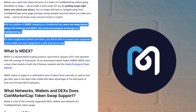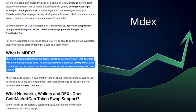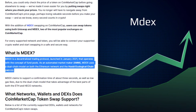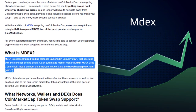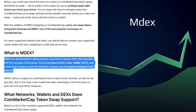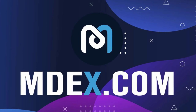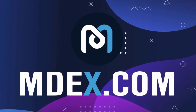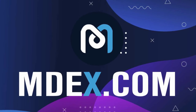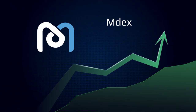What is MDX? MDX is a decentralized trading protocol launched in January 2021 that operates with the concept of fund pools. As an automated market maker, or AMM, MDX uses a dual-chain model on both the Ethereum network and the Huobi Ecological Chain, or HECO. MDX claims to support a confirmation time of about 3 seconds, as well as low gas fees due to the dual-chain model that takes advantage of the best parts of both the ETH and HECO networks.